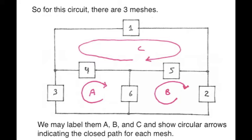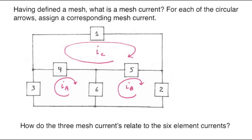This circuit has 3 meshes, labeled as mesh A, mesh B, and mesh C. Having defined meshes, what's a mesh current? For each of these circular arrows, we're going to associate a mesh current with the circular arrow serving as a reference direction arrow for the current. By convention, a clockwise direction has been taken.